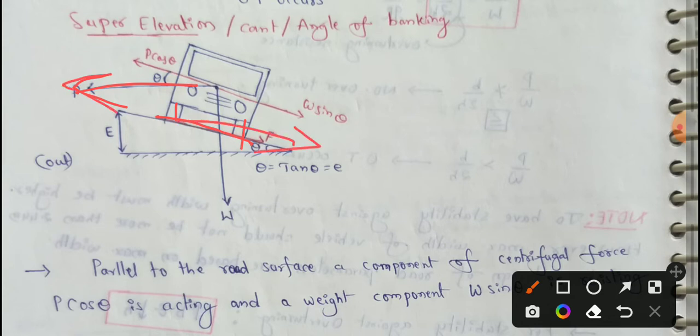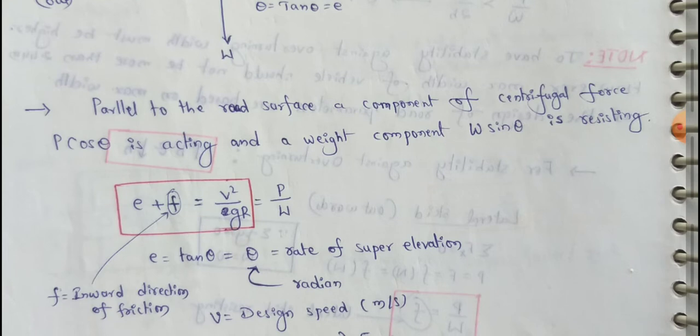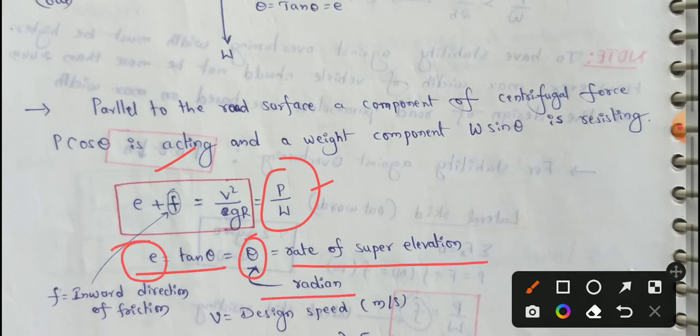Centrifugal force is in the outward direction, friction is in the inward direction, in the opposite direction. In the formula, E plus F is equal to V square by GR is equal to centrifugal ratio. E equal to tan theta. E equal to rate of super elevation.